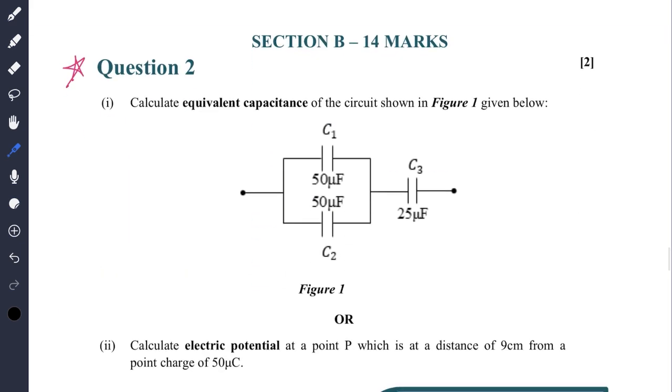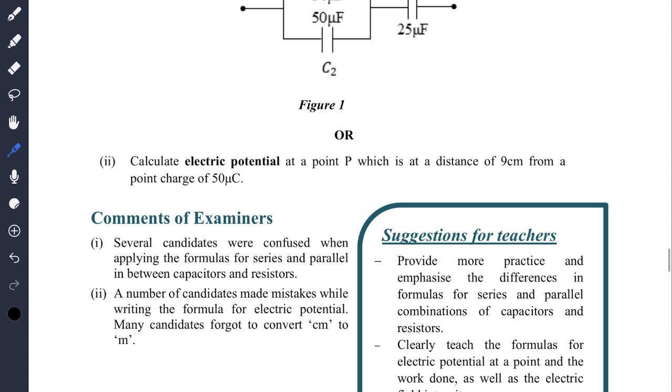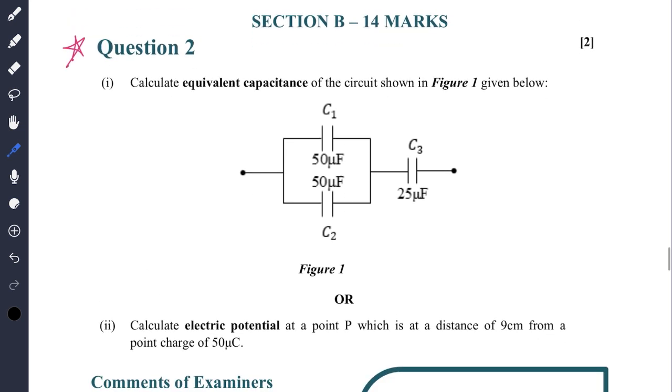Moving on to question number two: calculate equivalent capacitance of the circuit shown in this figure. If you see, several candidates were confused when applying the formulas for series and parallel between capacitors and resistors. You need to know about capacitance and resistance - they are two different concepts and the formulas are totally different. Make sure that you do not get stuck in this part. It's a very simple question and it is usually asked every year.